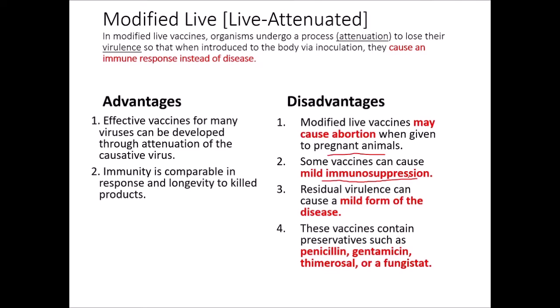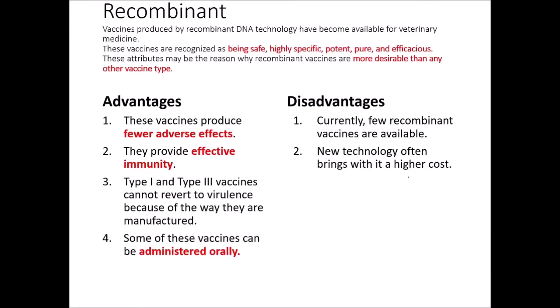Most of these do have penicillin, genomycin, thimerosal, or fungistat as a preservative. Recombinant vaccines are produced by recombinant DNA technology and have become more available for veterinary medicine. They're usually pretty safe, highly specific for that disease, very potent, pure, and efficacious — more desirable than any other vaccine type. They have fewer adverse effects and provide effective immunity. Type 1 and type 3 vaccines cannot revert to virulence because of the way they're manufactured, and some of these vaccines can even be administered orally. There is a recombinant kennel cough vaccine that can be administered orally. There are few recombinant vaccines available at this point, and new technology often brings a higher cost, but they are becoming more prevalent in veterinary medicine.